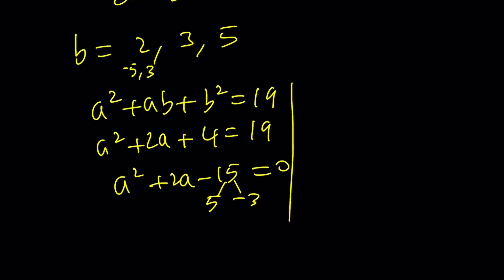And if b is equal to 3, then you're going to get a squared plus 3a plus 9 is equal to 19, which gives you a squared plus 3a minus 10 is equal to 0. And from here, the factor is going to be 5 and negative 2. Again, you're going to get negative 5 and positive 2. So negative 5 kind of pops out all the time. And then these are a values.